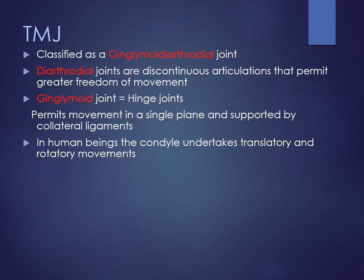The TMJ is a unique joint. It is classified as a ginglymoarthroidal joint. It's diarthroidal as there are two joints and they are discontinuous articulations that permit greater freedom of movement. The word ginglymoid means it's a hinged joint and permits movements in single planes supported by collateral ligaments. In human beings, the condyle undertakes translatory as well as rotatory movements while opening and closing the joints.